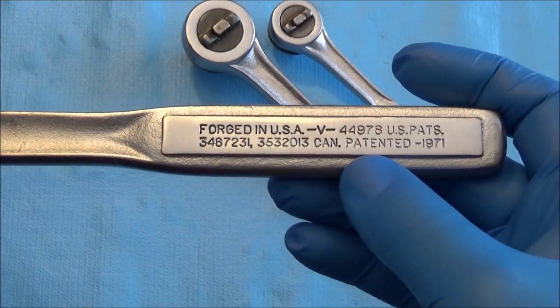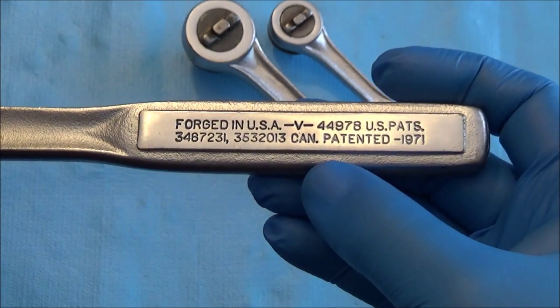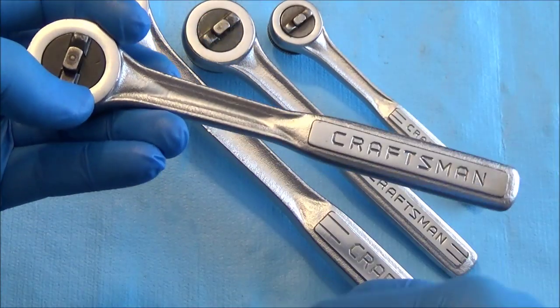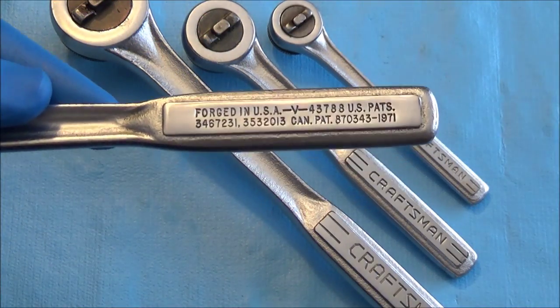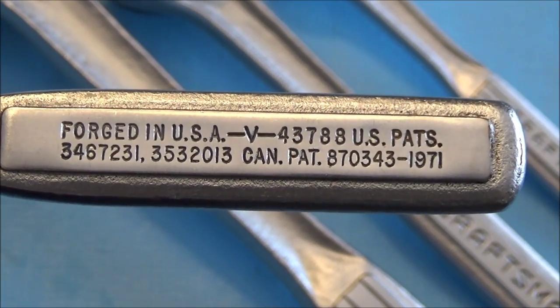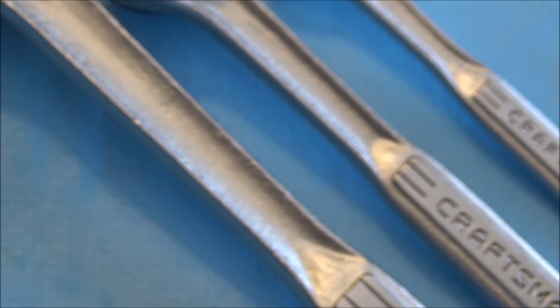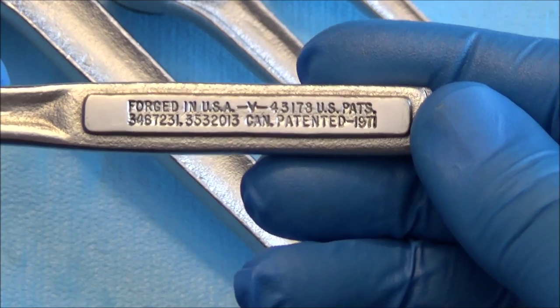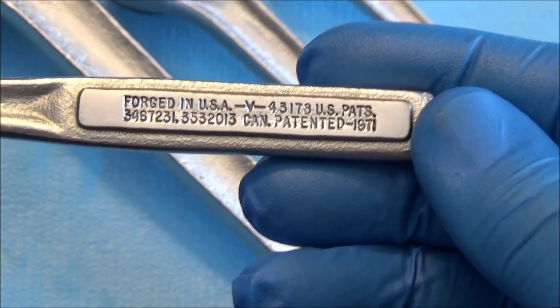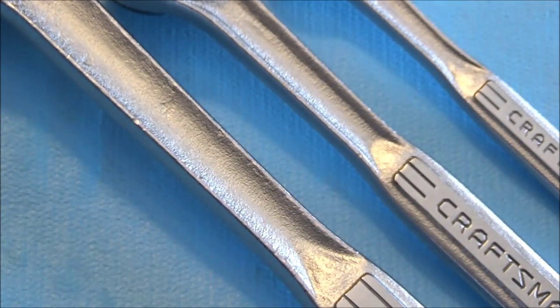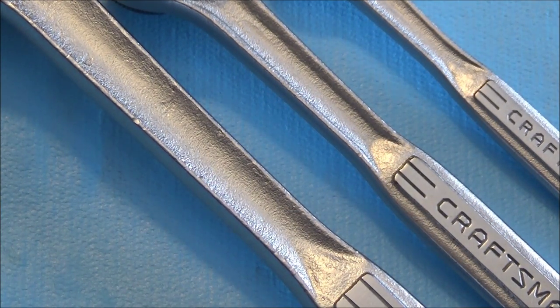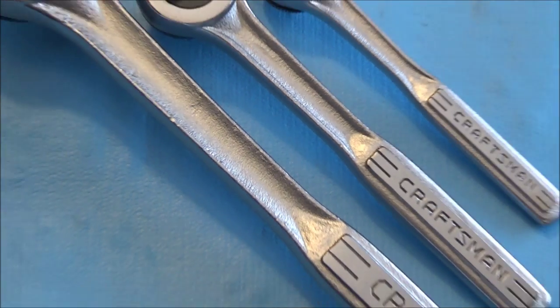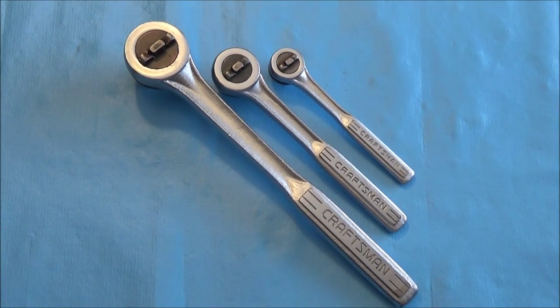Let's go ahead and read the number. We've got for half inch, four four nine eight seven. Then I actually have two right here, we've got a three eighths with a serial number on it, that's four three seven eight eight. And then we've got quarter inch right here at four three one seven three. As you can see, these were all made in 1971.